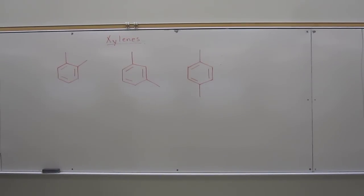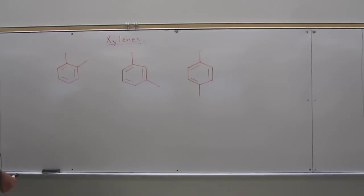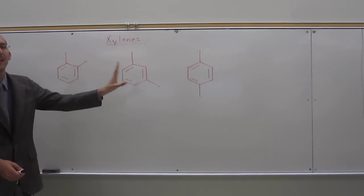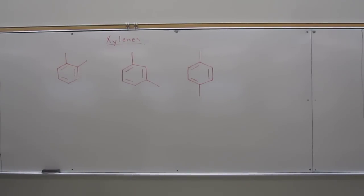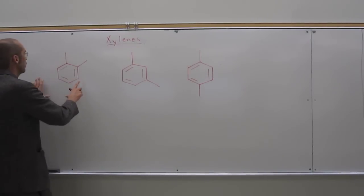Okay, so these are the isomeric xylenes. You can see they're all three disubstituted benzene rings, two methyl groups. So they're all isomers of each other. So structural isomers.